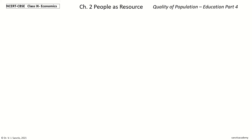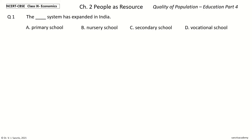Welcome to NCERT CBSE Class 9 Economics Chapter 2: People as Resource. In this video we will learn every point in the section Quality of Population, Education Part 4 — Elementary Education. This comprises 19 questions. Question 1: The dash system has expanded in India. The options are primary school, nursery school, secondary school, vocational school. The answer is primary school — the primary school system has expanded in India.